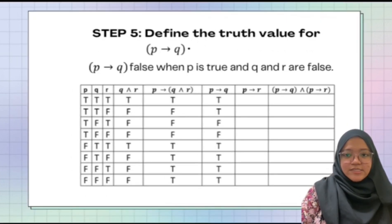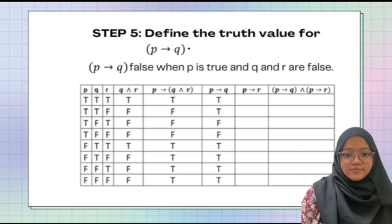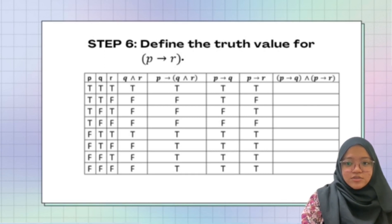Step five is to define the truth value for P → Q: T, T, F, F, T, T, T, T. Step six is to define the truth value for P → R: T, F, T, F, T, T, T, T.